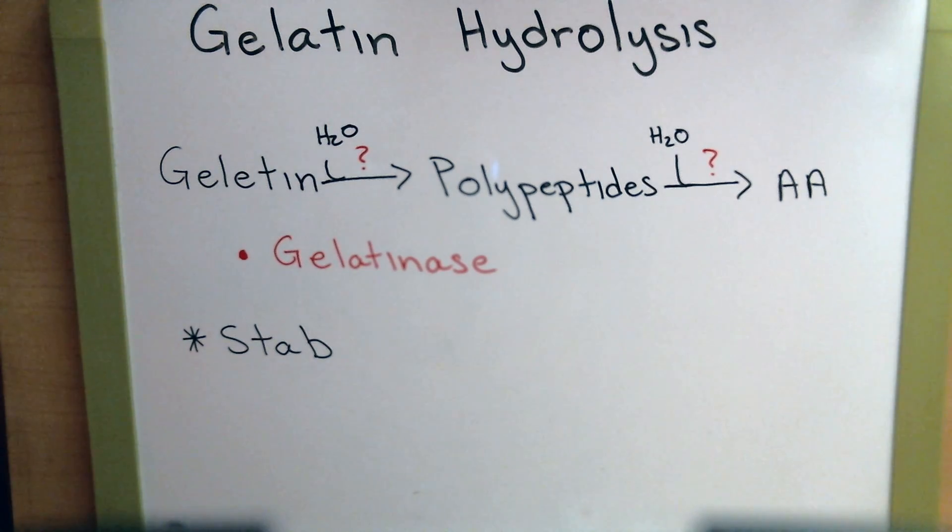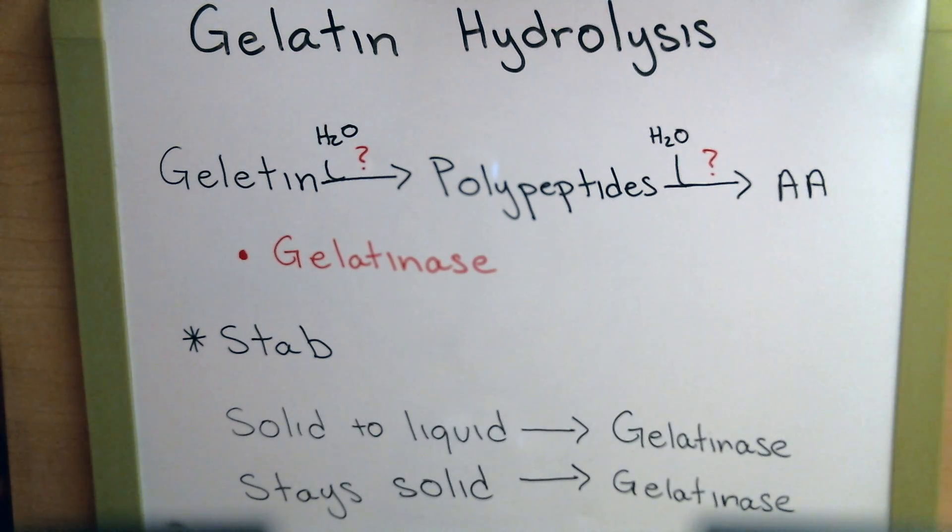Now the way that we'll be doing this experiment is a simple stab technique. So after we've stabbed and inoculated the bacteria, we're going to take it out and examine it. One of two things will happen. Either the solid will have become partially liquid or completely liquid, and in that case, our bacteria is gelatinase positive, meaning that it did break down the gelatin to the polypeptides and eventually to the amino acids.